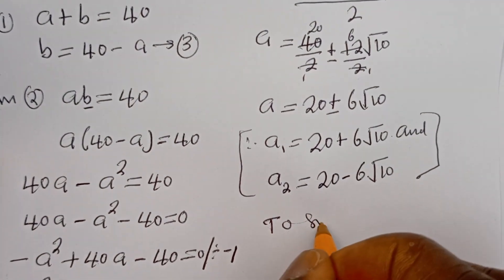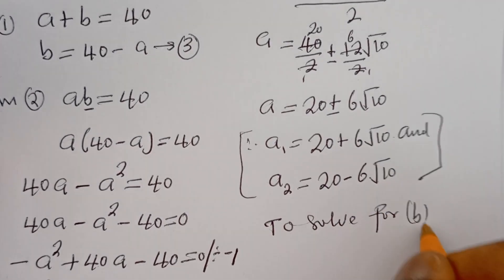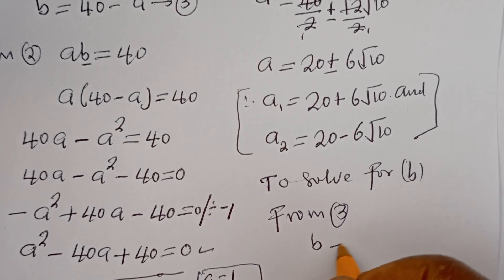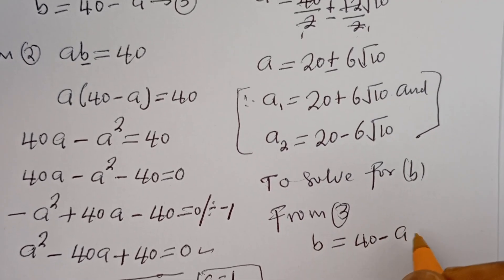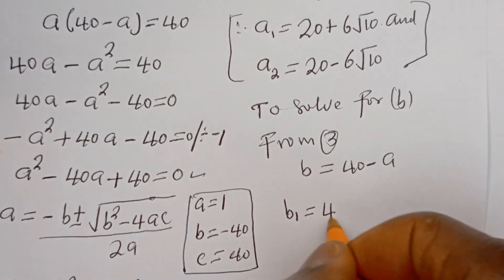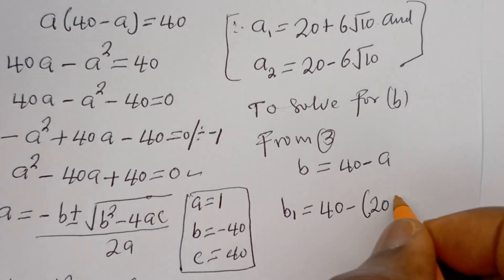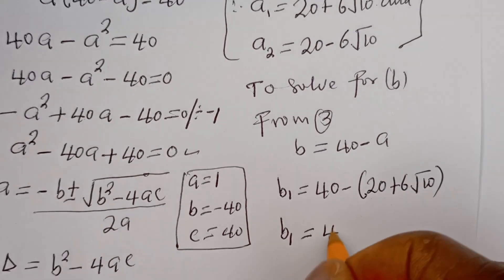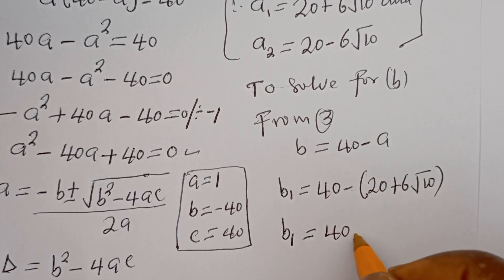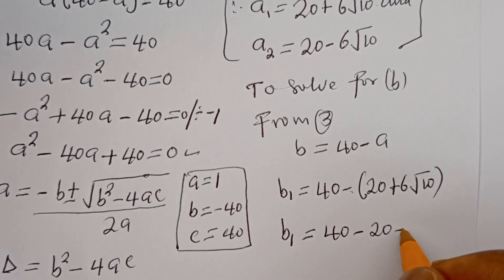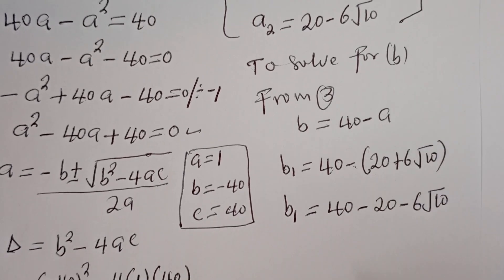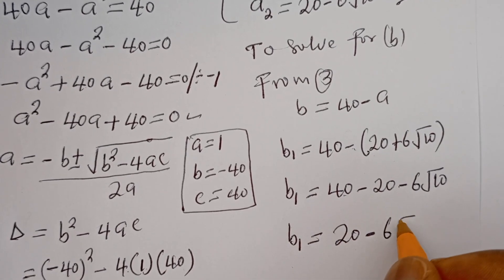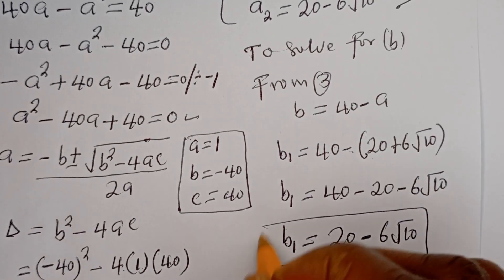To solve for B, from equation 3, B is equal to 40 minus A. So B1 equals 40 minus A1, which is 40 minus (20 plus 6 root 10). Opening the bracket: B1 equals 40 minus 20 minus 6 root 10, so B1 is equal to 20 minus 6 root 10.